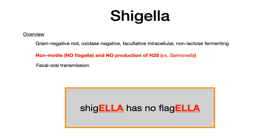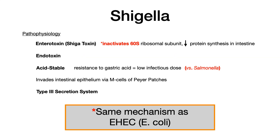Shigella is transmitted fecal-orally, which explains some of the symptoms. For pathophysiology, Shigella has an enterotoxin known as the Shiga toxin. What's really high yield is the mechanism: it inactivates the 60S ribosomal subunit, which decreases protein synthesis in the intestinal cells.